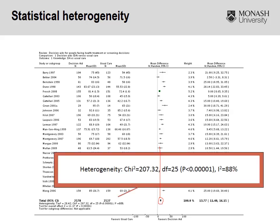Another way to identify heterogeneity is to look at the chi-squared statistic. In this case the degrees of freedom are 25 and the chi-squared is 207. Because the statistic is much higher than the degrees of freedom, it indicates statistical heterogeneity is present, which would question the validity of the meta-analysis. We can also look at the p-value — this is the one time we would not want a p-value less than 0.05, because here that would indicate a statistical difference between the studies. In this case the p-value is less than 0.01, which confirms the presence of statistical heterogeneity.